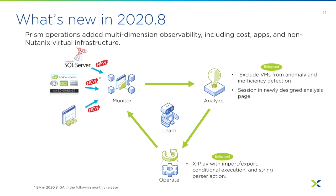We also have another product called Beam for on-premises environments, focused on cost governance. That will be included as part of Prism, so you can have one single solution covering not only capacity but also performance as well as cost. You will see more and more data integration in the future.